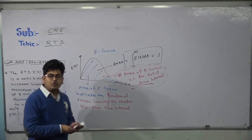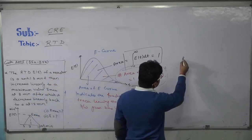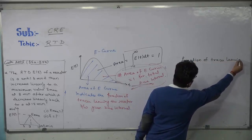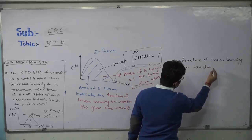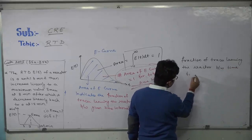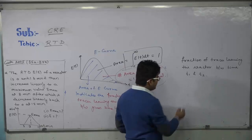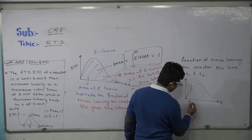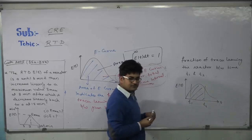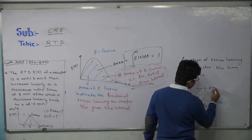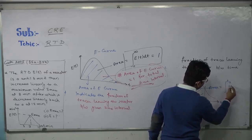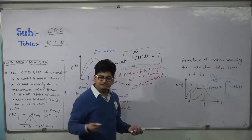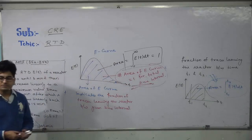If someone asks you the fraction of tracer leaving the reactor between time t₁ and t₂, simply find the area of the E curve between t₁ and t₂, which equals the integral from t₁ to t₂ of E(t)dt. That is something important about the E curve.